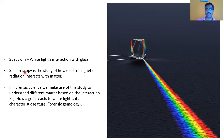In forensic science, we make use of the study of spectroscopy a lot. We have UV-Vis spectroscopy, spectrophotometry, mass spectroscopy, atomic spectroscopies, and infrared spectroscopy. There are multiple types of spectroscopy used in forensic science, and the basic idea is that spectroscopy studies how electromagnetic radiation interacts with different matter.